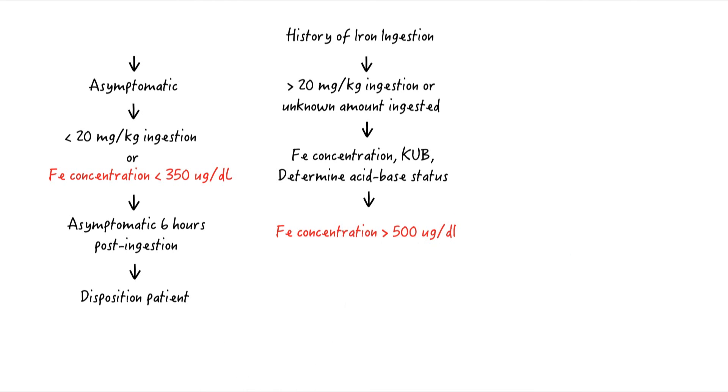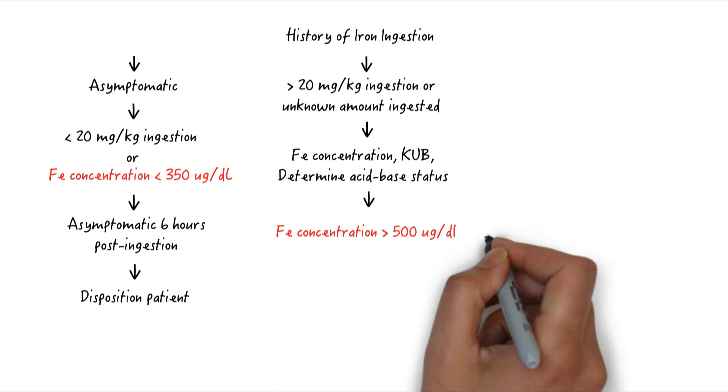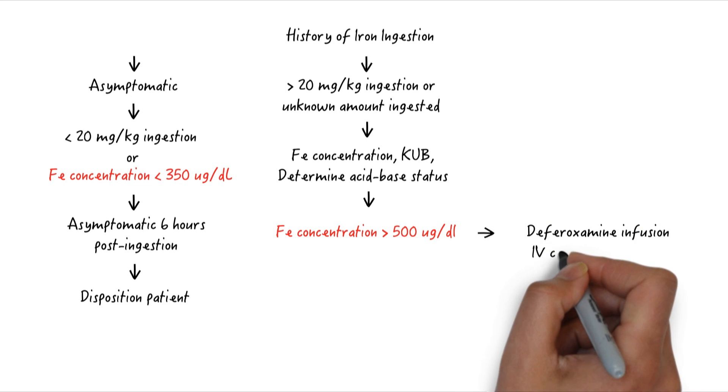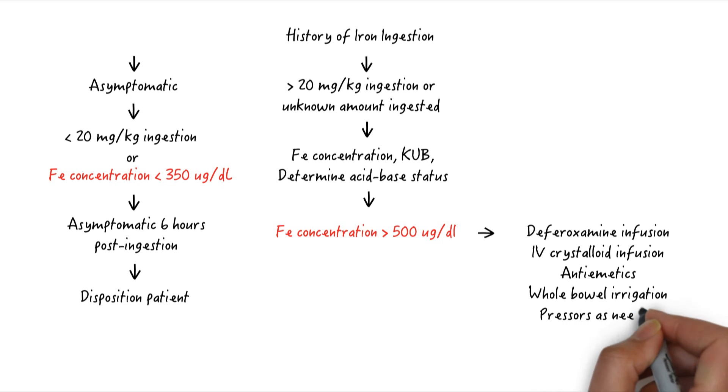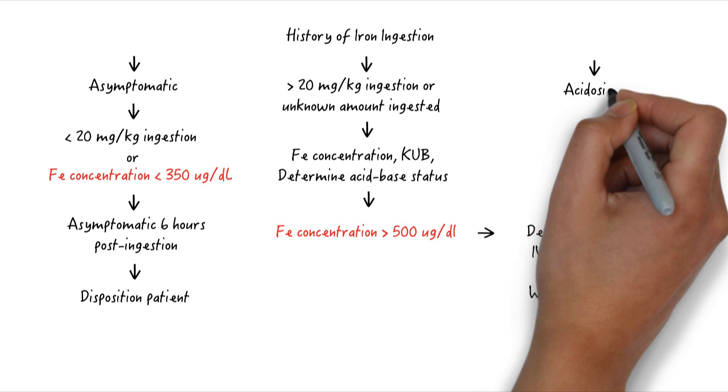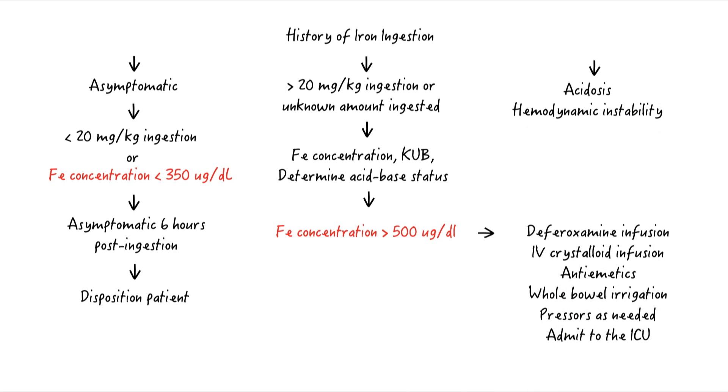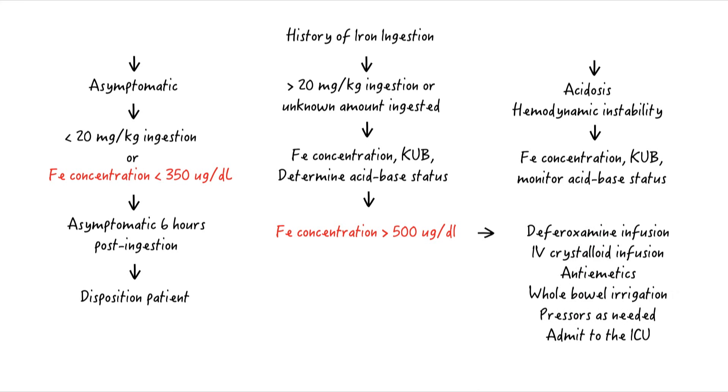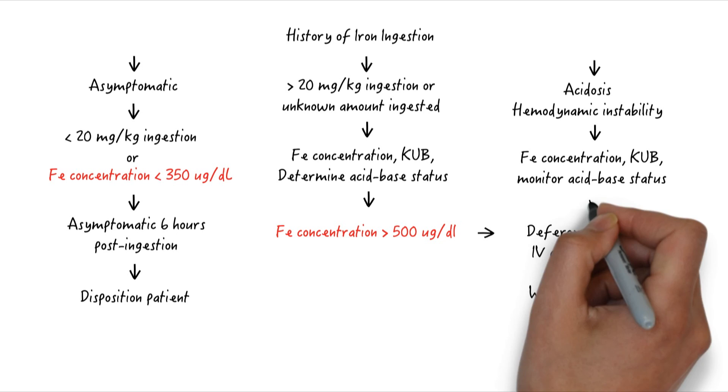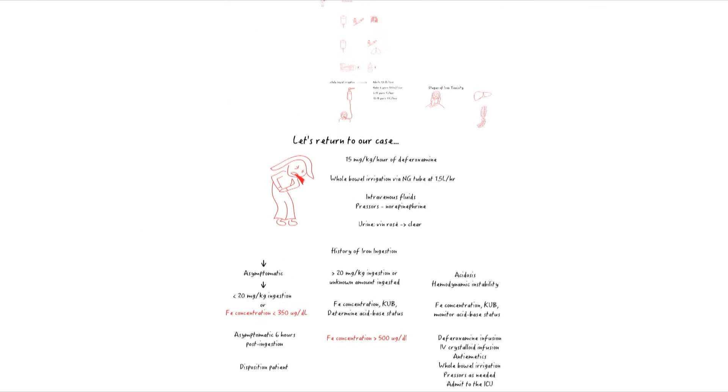If concentration is 500 micrograms per deciliter or greater, begin treatment with deferoxamine and begin whole bowel irrigation. If the patient reports iron ingestion and at any time develops metabolic acidosis or hemodynamic instability with hypotension and tachycardia, send serum iron concentration and begin deferoxamine infusion with whole bowel irrigation and disposition to the ICU.